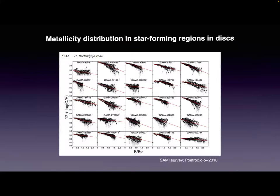One of the main properties we have been studying for a long time is metallicity — the metallicity profile — so the metallicity distribution in star-forming regions in disks. These are observations from the SAMI survey. Here we have a set of galaxies with their metallicity profiles: oxygen over hydrogen. In general, they have a negative metallicity gradient, with central regions more enriched than the outer parts, but the slopes of these gradients differ. Some are weaker and some are very steep.